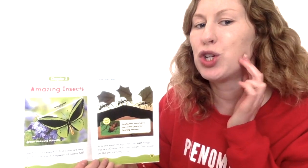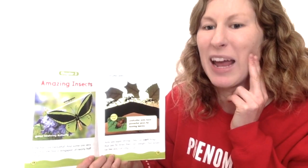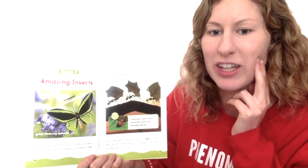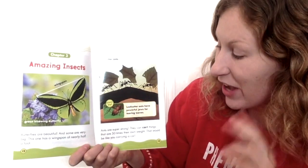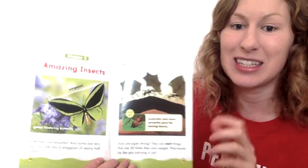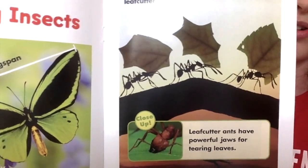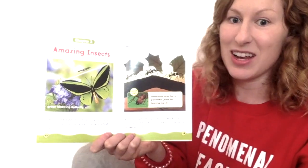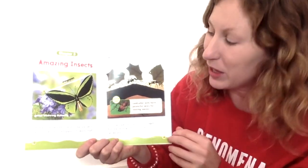Everyone put two fingers on your jaw and bite like you're biting into a big sandwich. The jaws on a leaf cutter are for tearing these leaves. If you look at these leaves up there, some of them are broken — those ants went around and tore those leaves, and now they're carrying them back to shelter to feed their family.